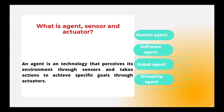In a human agent, we have eyes and ears as sensors — they receive input from the environment. We have hands as actuators that perform actions. We have ears as sensors and a mouth as an actuator — ears sense input and the mouth gives a response. So ears are sensors and mouth is an actuator.